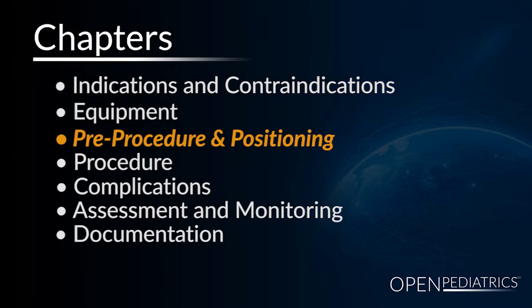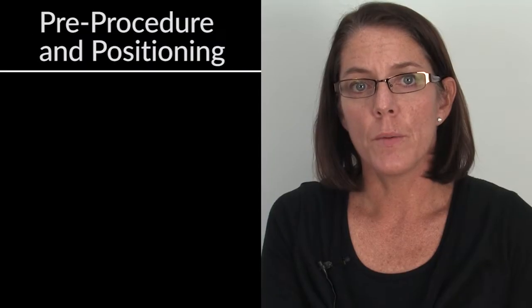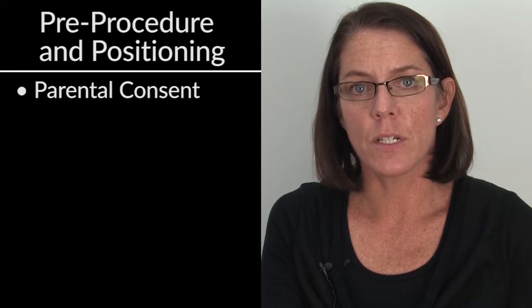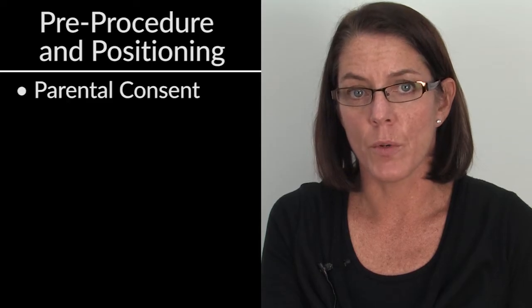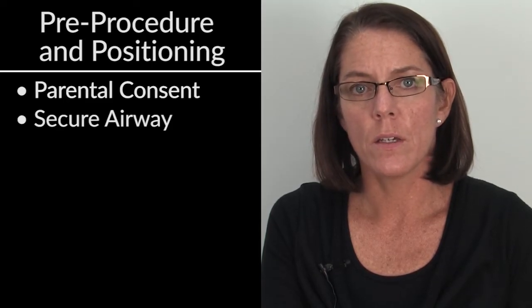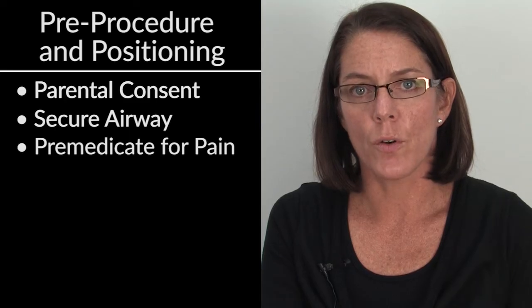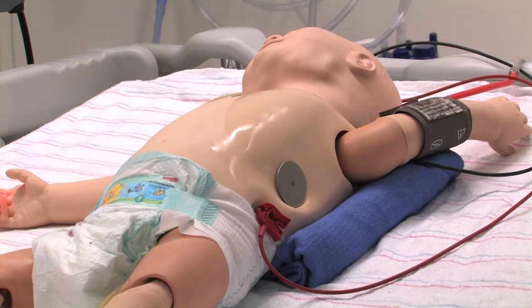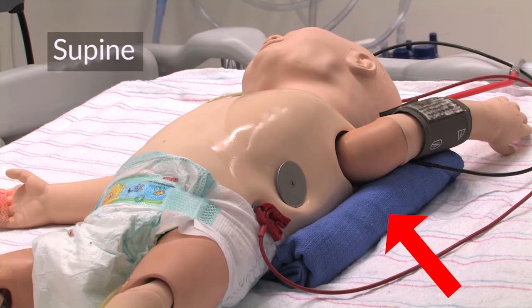Pre-procedure and positioning: obtain parental consent if non-emergent. Ensure secure airway. Pre-medicate for pain control. Position the infant supine with the affected side elevated with a shoulder roll and the arm on the affected side restrained superiorly over the head.